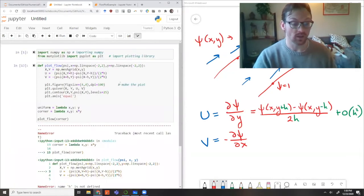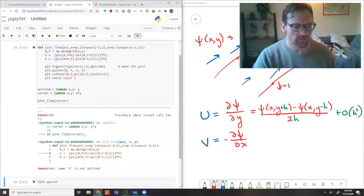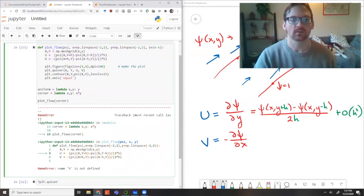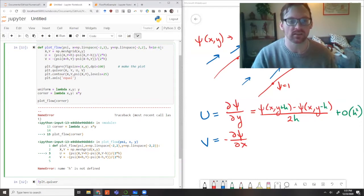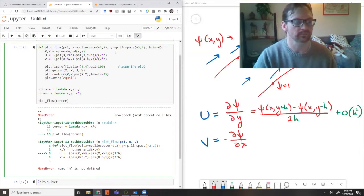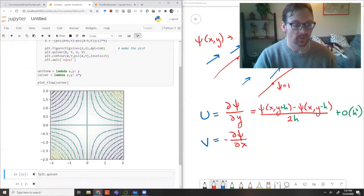Let's give this one a shot. That didn't work because we haven't defined h. Let's use a small value like 10 to the minus 6 for our h. That should be very small compared to our resolution, so the error should be really small, like 10 to the minus 12. Now it worked. We can see these arrows, but they're actually a little too small. I think we have too many arrows.